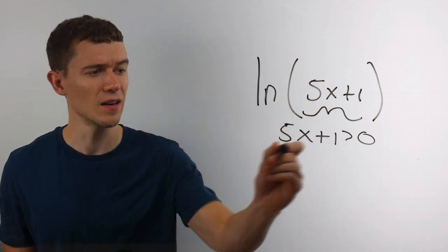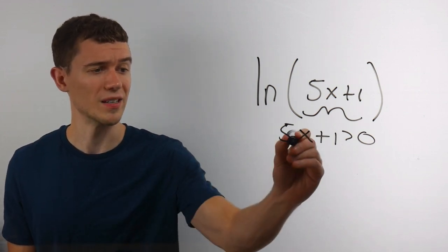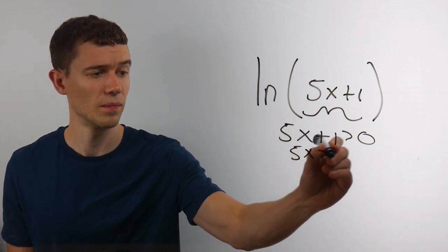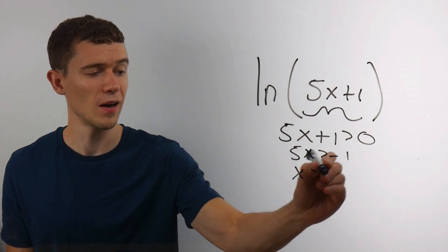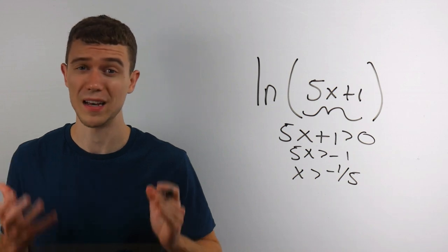We take the inside, we set it greater than 0, and we solve. Here we can subtract 1 and then divide by 5 to get our domain as x is greater than negative 1 fifth.